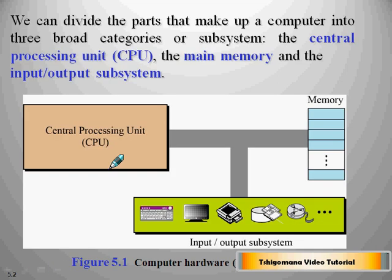We can divide the parts that make up a computer into three broad categories or subsystems: the central processing unit, which is called the CPU; the main memory; and the input-output subsystems.